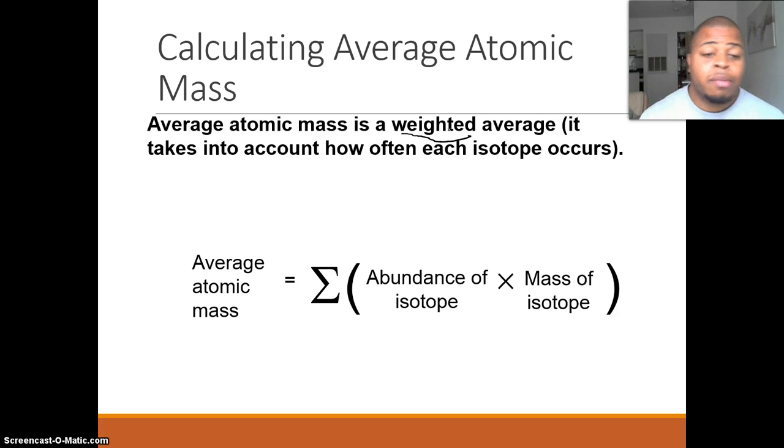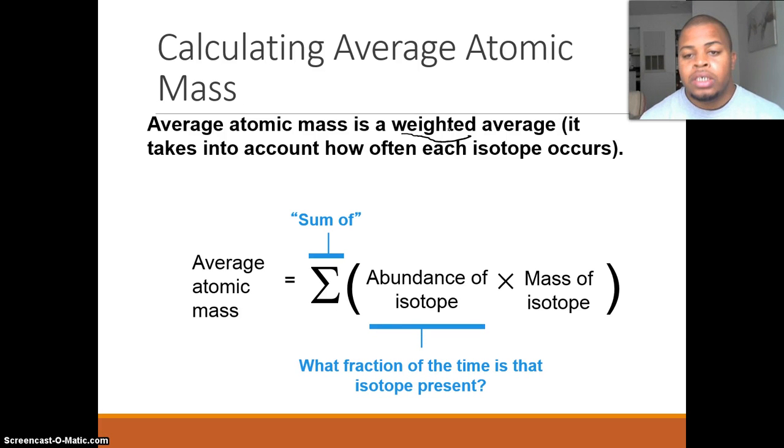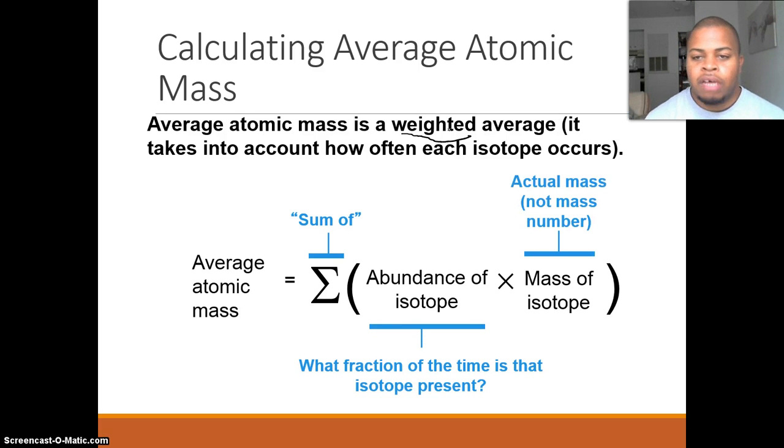Now, look at our formula here at the bottom of the screen. We have our average atomic mass equals the sum of the abundance of the isotope, how often it occurs, times the mass of the isotope, the actual mass, not the mass number. Sometimes you'll be given the mass number, sometimes you'll be given the actual mass. If you're given the mass number, use just the mass number. If you're given the actual mass, then make sure you use the actual mass.